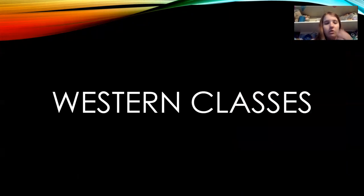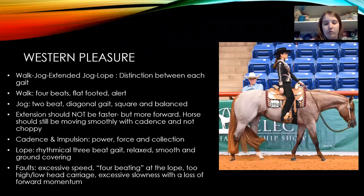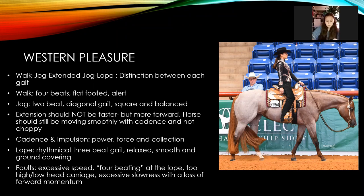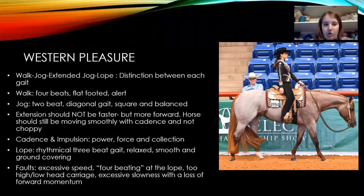First we're going to go over the different types of Western classes. Our first and most common Western class is Western pleasure. You're doing the gaits of a walk, jog, extended jog, and lope primarily in these classes, and you want to have distinction between each gait. Your walk is your typical 4-beat gait — it should be flat-footed but alert. There should still be ground-covering movement, but they shouldn't be super sluggish and moving very slowly.